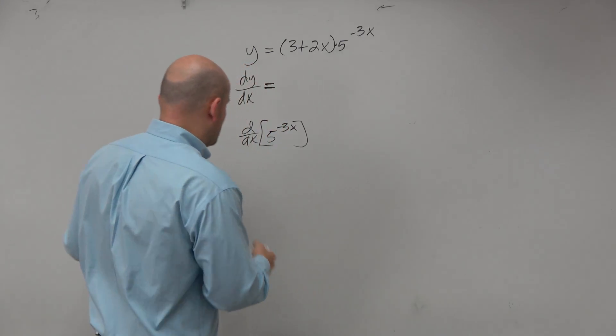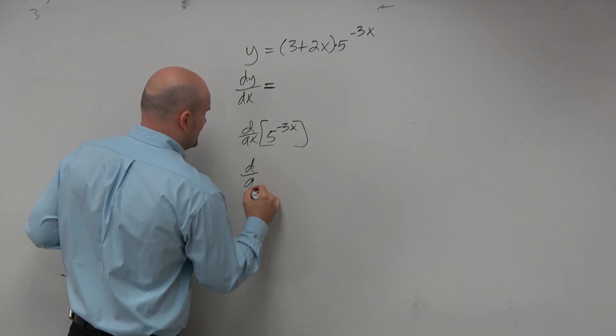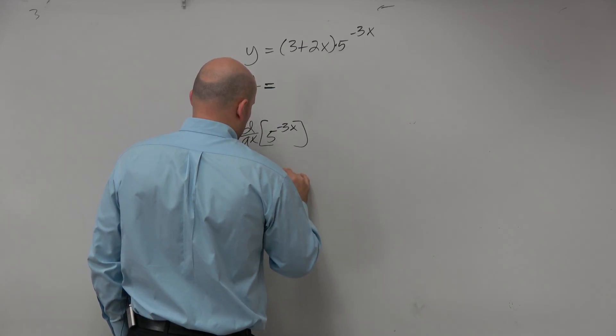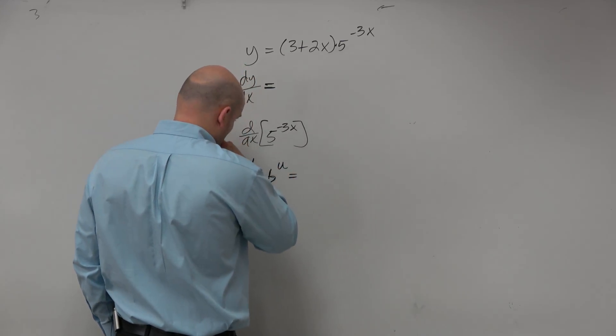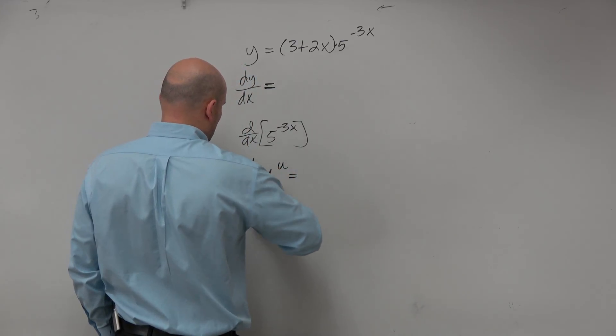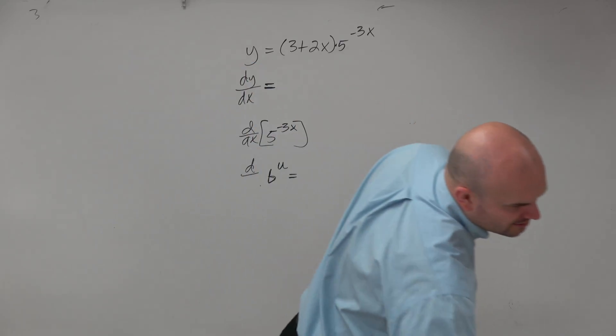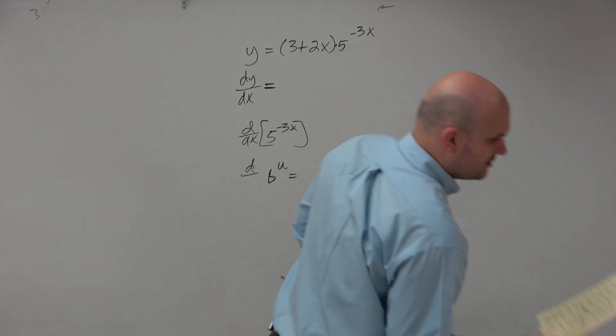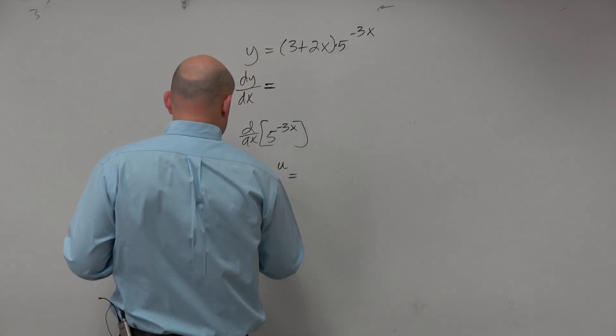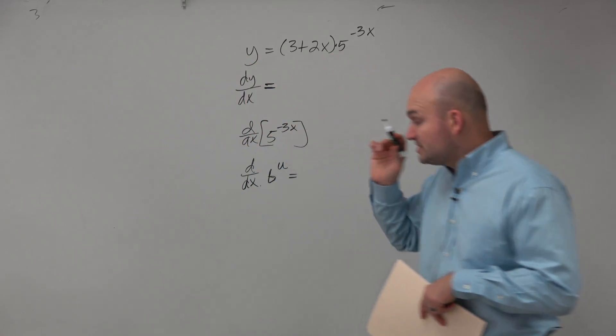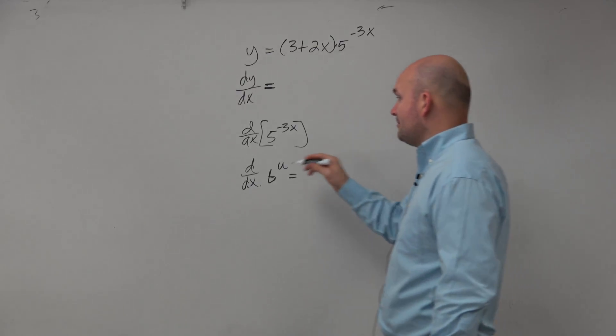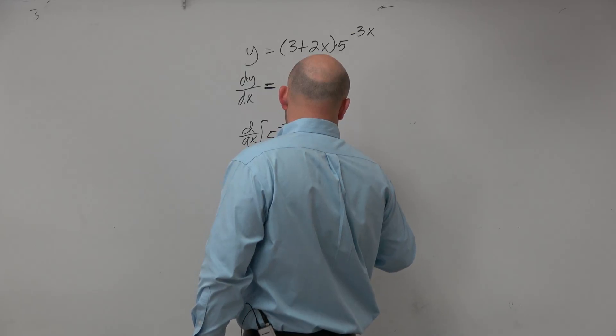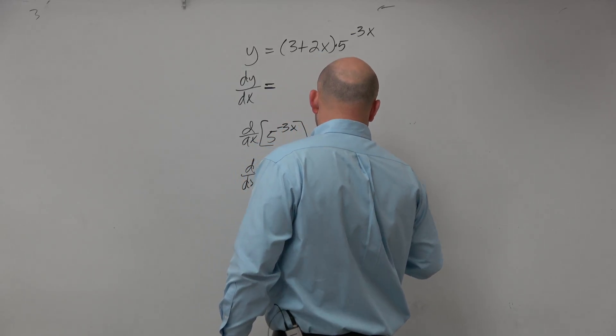And just remember, let's go over d over dx of b raised to the u. What did I write in there? d over dx of b to the u, where u is going to be a differentiable function. Remember, the derivative of this was b to the u times ln of b times u prime.